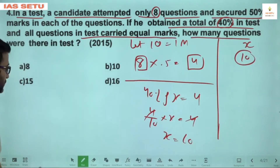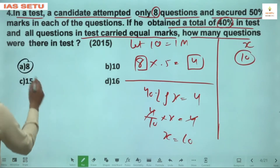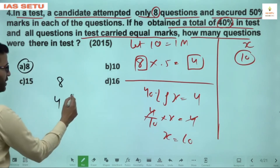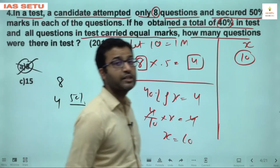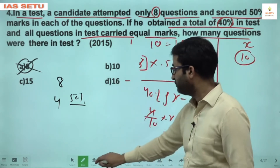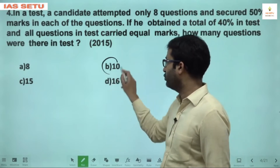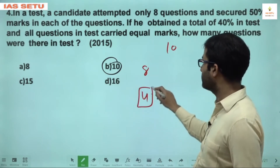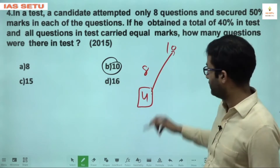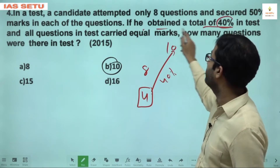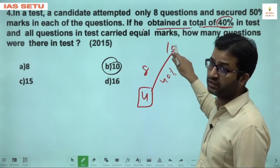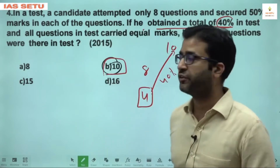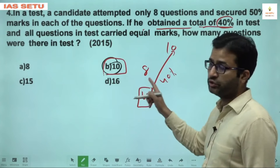You can also use answer options. If total questions = 8, marks = 4, that's 50% — but it should be 40%, so try 10. With 10 total questions, 8 attempted at 50% each gives 4 marks, which is exactly 40% of 10. So there were 10 questions. Question 4 answer is B.